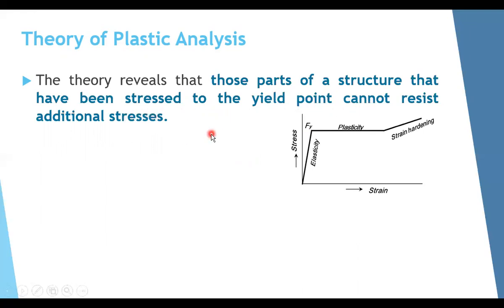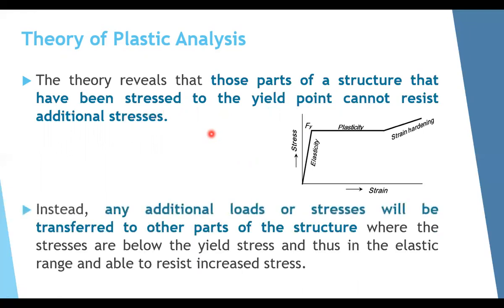If I add extra load, any additional loads or stresses will be transferred to other parts of the structure. If a cross-section starts reaching yield, it cannot resist additional stresses. So if you increase the load, those stresses are transferred to other parts of the structure where stresses are still below the yield stress, so those parts can continue to resist more additional loads.